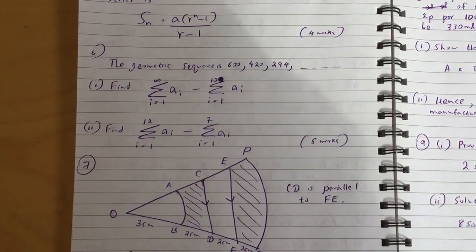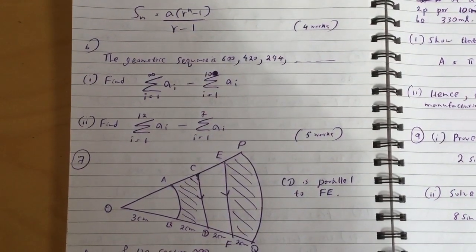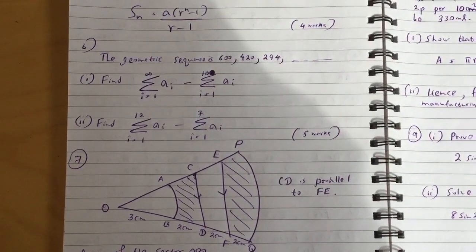And part two: find sum of i equals 1 to 12 of a_i minus sum of i equals 1 to 7 of a_i.